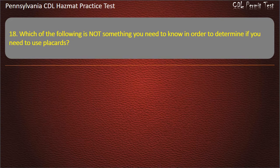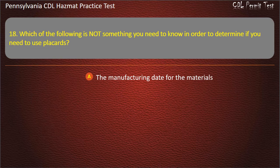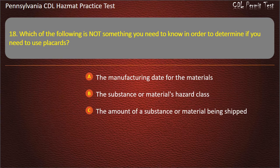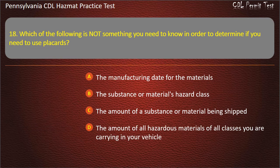Question 18. Which of the following is not something you need to know in order to determine if you need to use placards? Options: The manufacturing date for the materials; The substance or material's hazard class; The amount of a substance or material being shipped; The amount of all hazardous materials of all classes you are carrying in your vehicle. Answer: The manufacturing date for the materials.